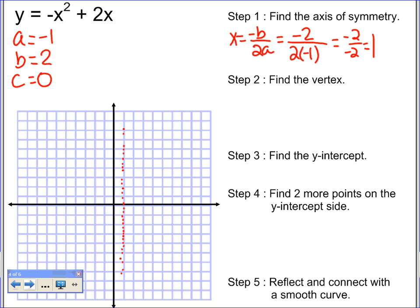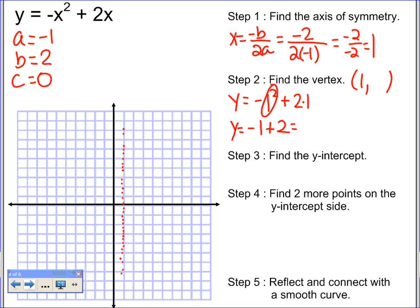Now I've got to find the vertex. The x value is 1, so I plug 1 into the equation. y equals negative 1 squared plus 2 times 1. The squared belongs just to the 1, so I get negative 1 plus 2, which gives me 1. My y value is 1, so I plot the vertex at (1, 1). Now I've got to find the y-intercept — it's just my c value, which is 0. So I go to the y-axis and plot 0.